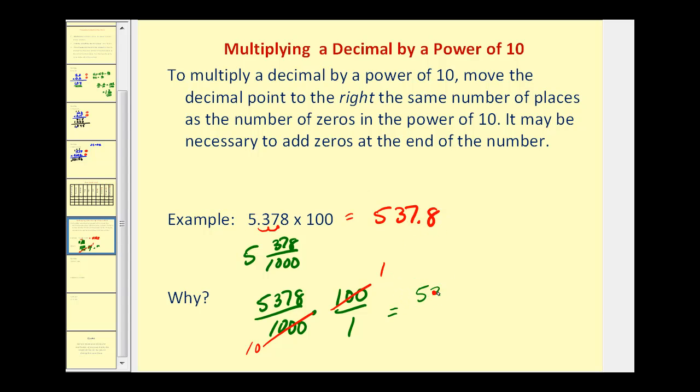And we would have 5,378 tenths, which would be 537 and eight tenths. And that does match our answer using the shortcut method.